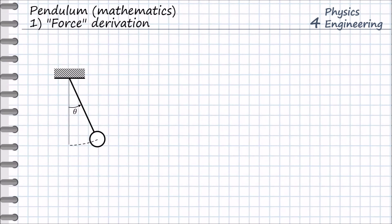The first method to solve the pendulum is force derivation. We know the length of the thread of the pendulum and we derive the forces acting on it — this is the gravity force and the reaction force. It will move with two accelerations: one is tangential, as shown in the picture, and the second is normal acceleration directed to the connection point at the top. We won't need the normal acceleration in this method, so it is not shown in the picture.